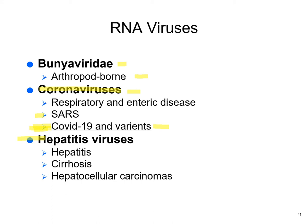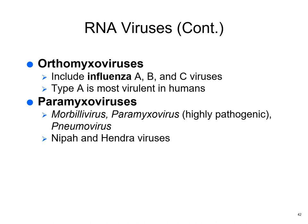Hepatitis viruses — A, B, C, and D — cause hepatitis, cirrhosis, and cancers. Orthomyxoviridae include influenza A, B, and C, with A being the most common in humans. Flu kills a lot of people. I personally get vaccinated every year — before I did, I got bronchitis and even pneumonia every single year; since starting vaccination I generally stay a lot healthier.